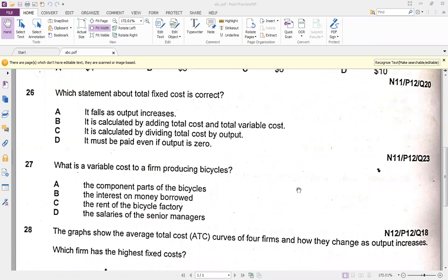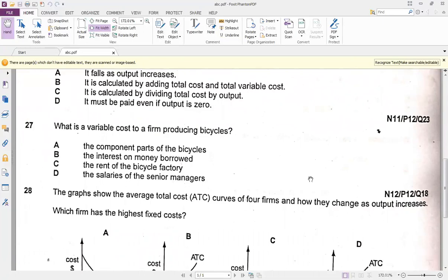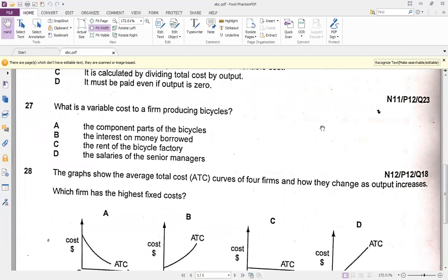Question 27: what is the variable cost to a firm producing bicycles? The variable cost is something which changes with the output. A, B, C, D we have: components parts of the bicycle, interest on money borrowed, rent of the bicycle factory, and the salary of the senior managers. We know that salaries are for the permanent staff so it's a fixed cost.